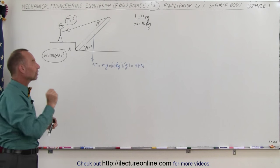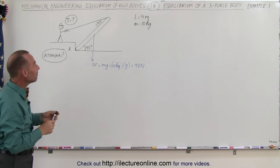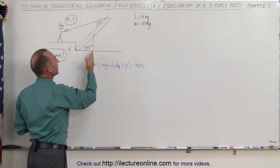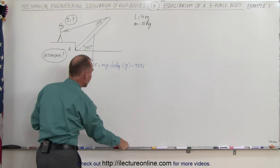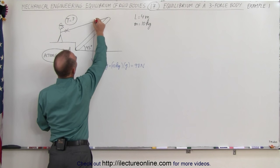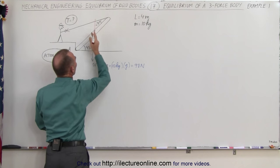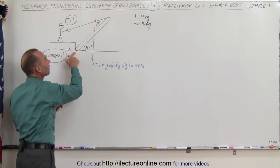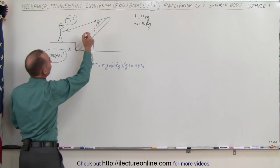First, let's try to find the direction of that force. Since it's a three-force body, we know we can find the direction of the third force by drawing the line of action of the first two forces, for which we know the direction. So let's continue this line of action straight up, and where the tension meets the line of action of the weight, we know that the third force — the action at A — must pass through that point.